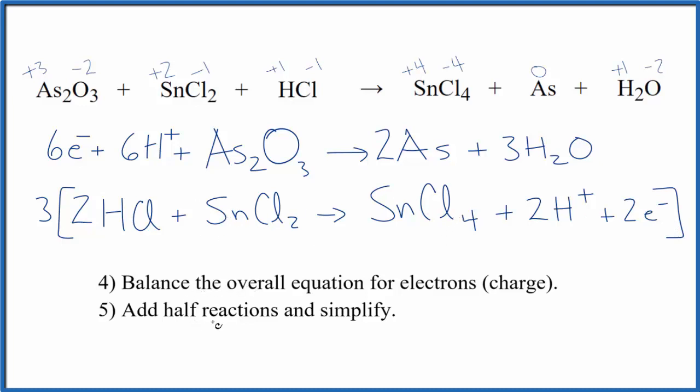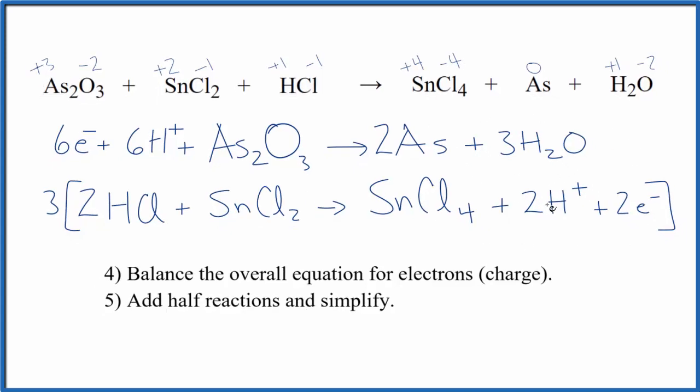So here's how we do it. We're going to add the half reactions together and simplify. So we have all of this and three times all of this. Those are the reactants. The products, this right here, and three times all of this. So that'll look like this.